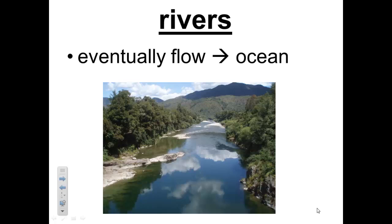Surface waters include rivers, streams, and lakes. Melting snow, rainwater, and groundwater all help form Earth's surface waters. Water from rain and melting snow flows downhill in small streams, and these small streams join to form larger streams and rivers. Most rivers eventually flow into the ocean, and groundwater also seeps into rivers.